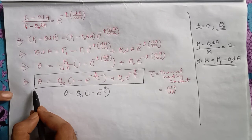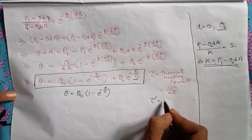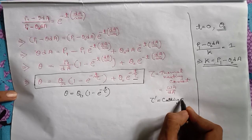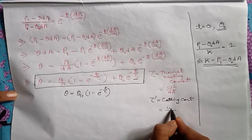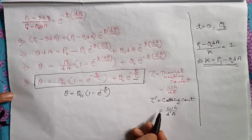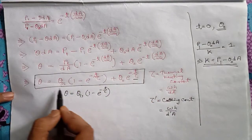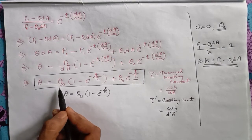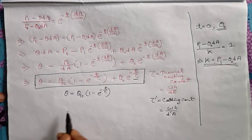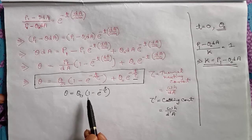For cooling, the expression will remain the same: θ = θ_ss·(1 − e^(−t/τ')) + θ₀·e^(−t/τ'). Here θ_ss will be the final temperature of the cooling and θ₀ will be the initial temperature when the cooling process starts. In my next video I will solve some examples related to the concept of heating and cooling of drives, and then everything will be clear.